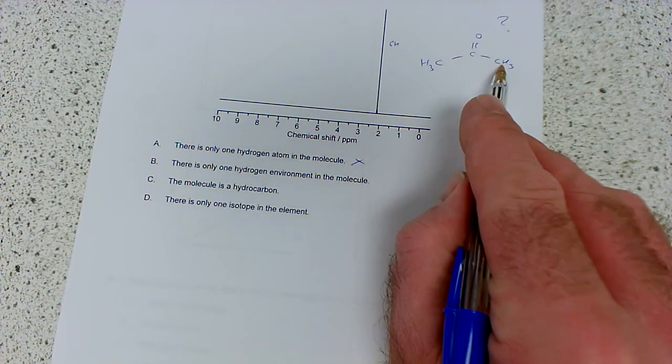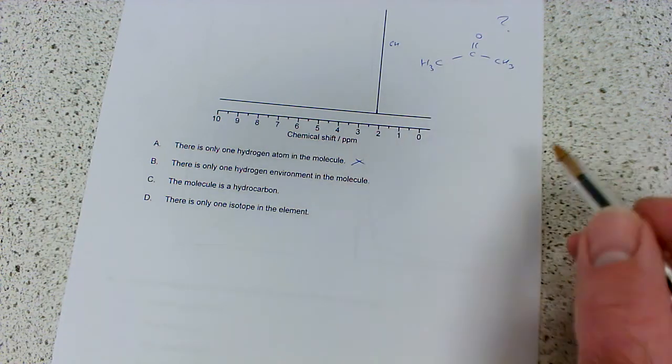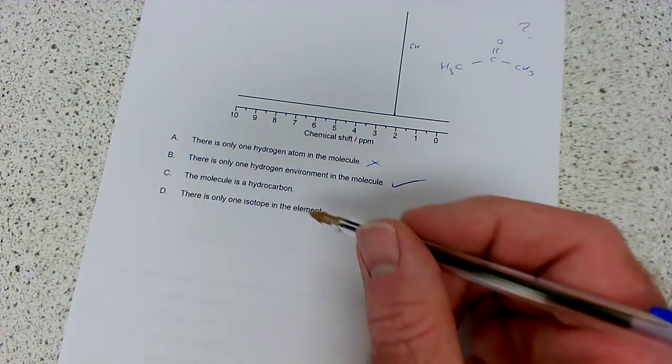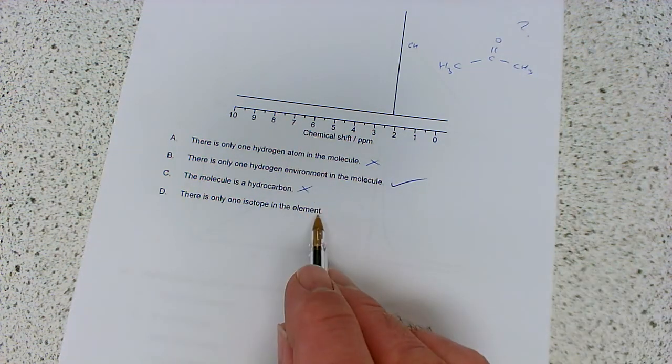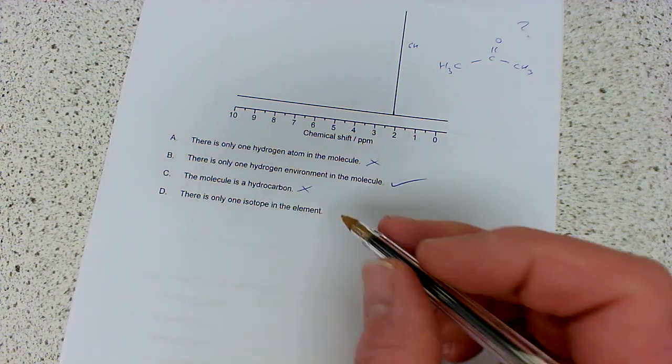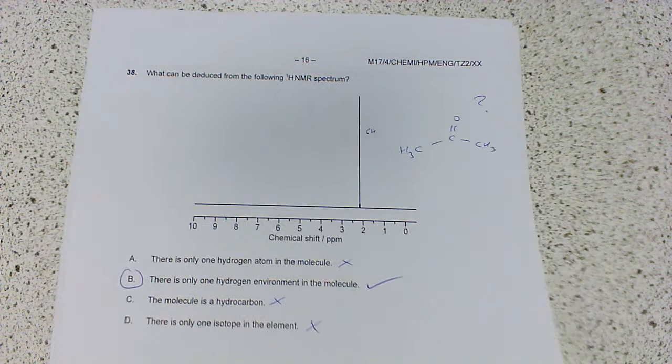Option B: there is only one hydrogen environment. Yes, the number of peaks tells us how many hydrogen environments there are. Because of symmetry, these three hydrogens attached to a carbon with C=O and OCH3 are in the same environment. It's B. It's not necessarily a hydrocarbon - propanone has oxygen. Answer B is correct.